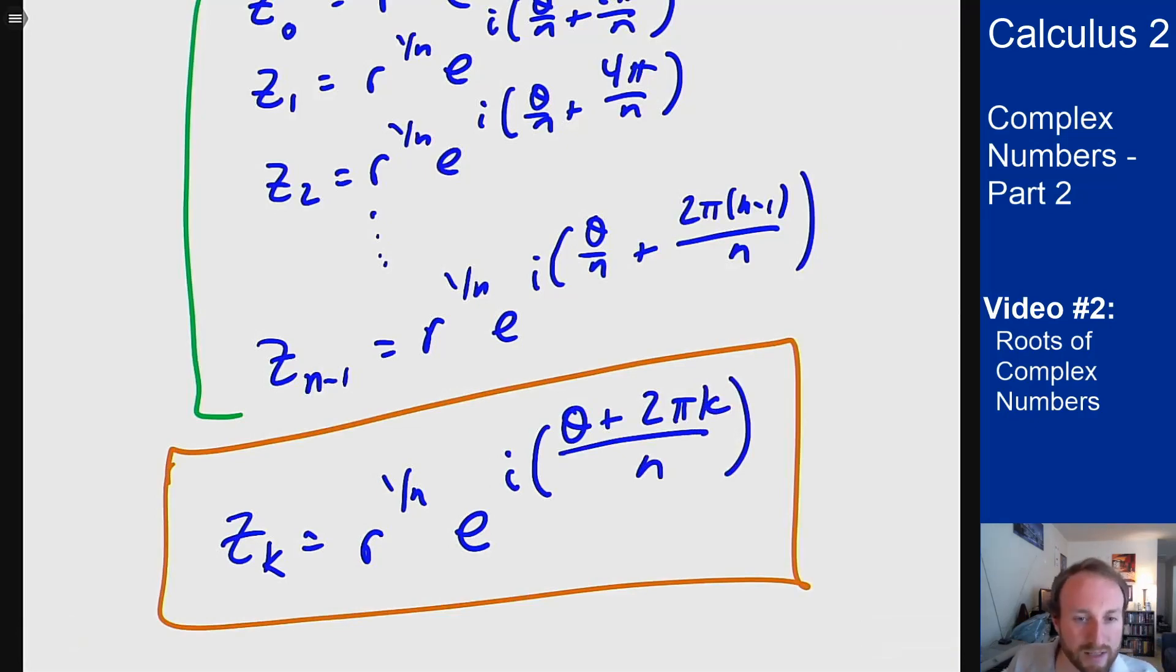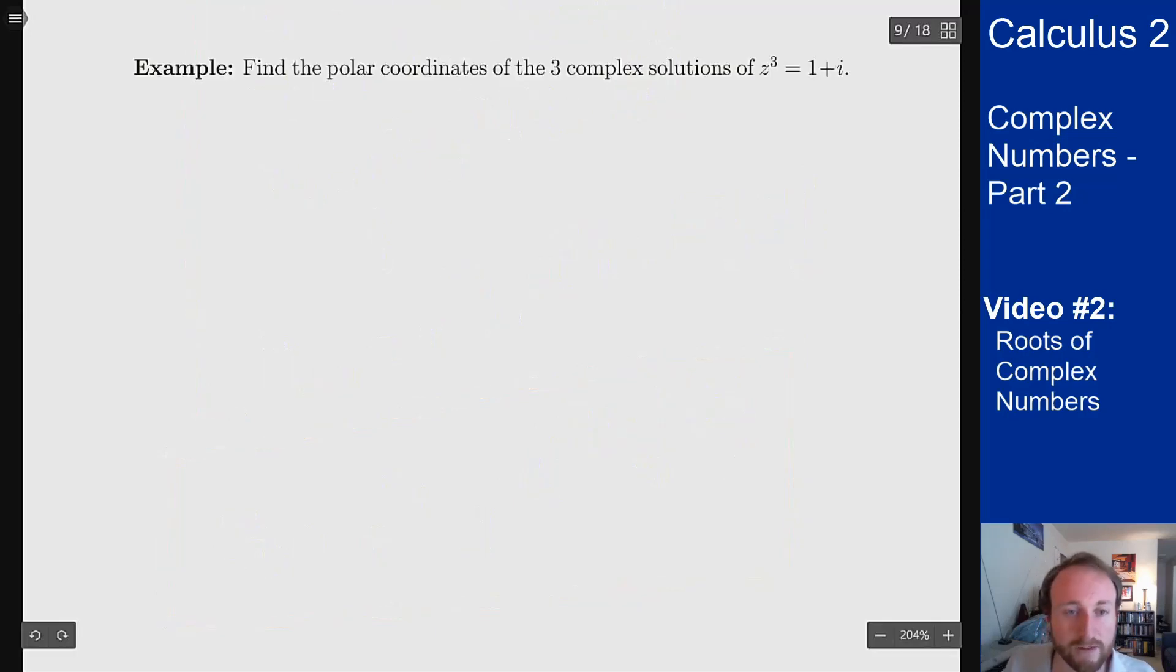Now it's important to realize here there are always n roots. They may not all be real but they're always n of them. As an example let's find the polar coordinates of the three complex roots of z cubed equals 1 plus i. So my w here is 1 plus i and I have n equals 3.